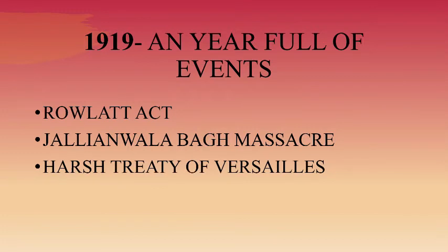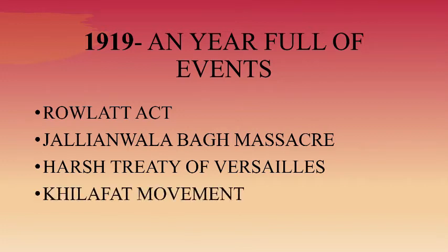The First World War had ended with the defeat of Ottoman Turkey, and a harsh and humiliating treaty was imposed on the Ottoman emperor, who was the Caliph of Islam. To defend the Khalifa's power, a Khilafat Committee was formed in Bombay in 1919 by Mohammad Ali and Shaukat Ali. Gandhi Ji saw this as an opportunity to bring Hindus and Muslims together under one umbrella through non-cooperation.